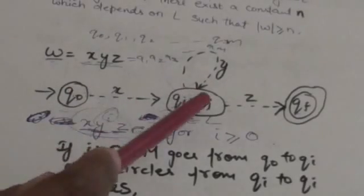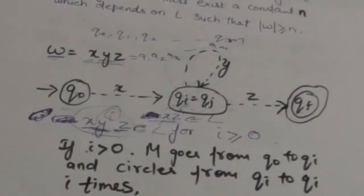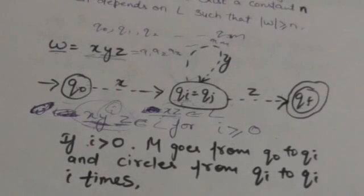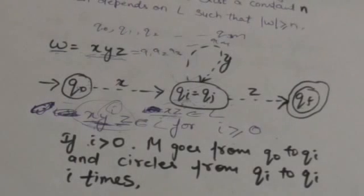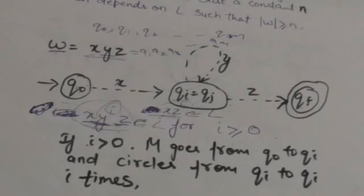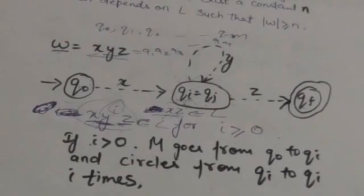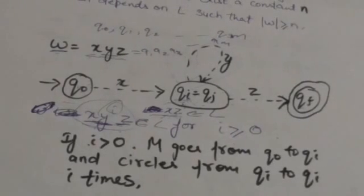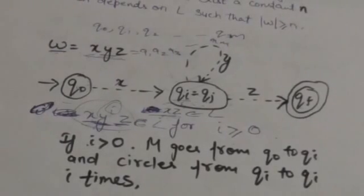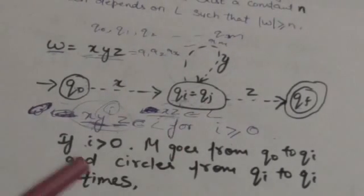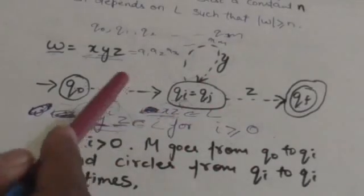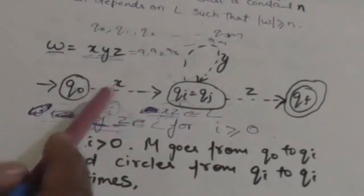So this string will be accepted by this finite automata. Now we have to prove that x y^i z, for all values of i greater than or equal to zero, will also be accepted by this finite automata — meaning x y^i z for all i ≥ 0 also belongs to language L. When i equals zero, the string becomes xz, so xz will be accepted by this finite automata.